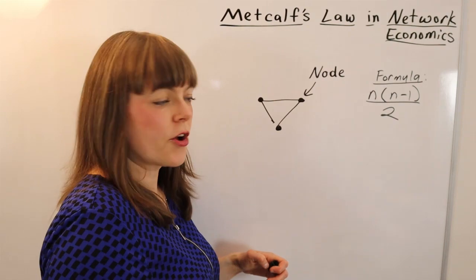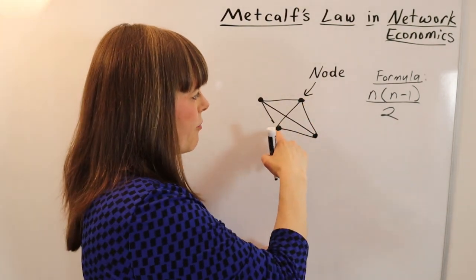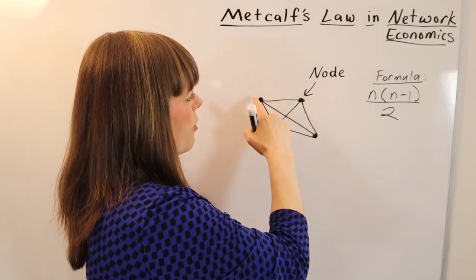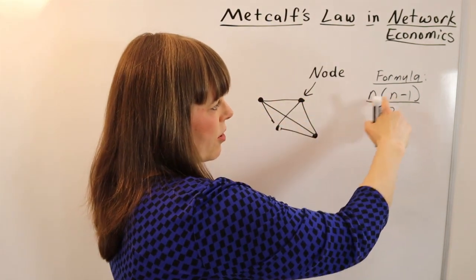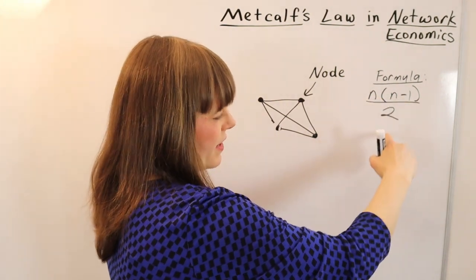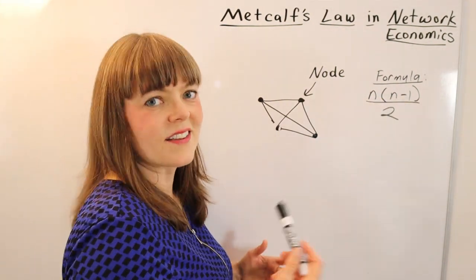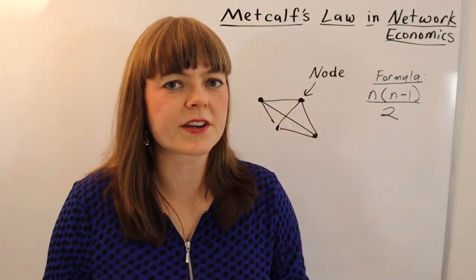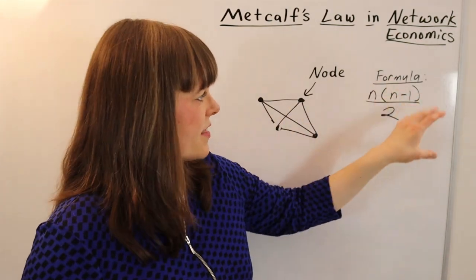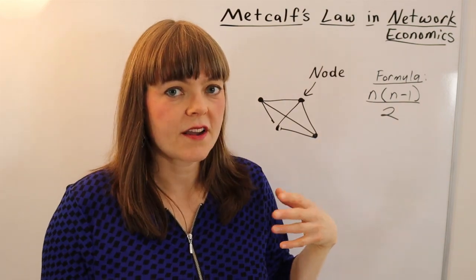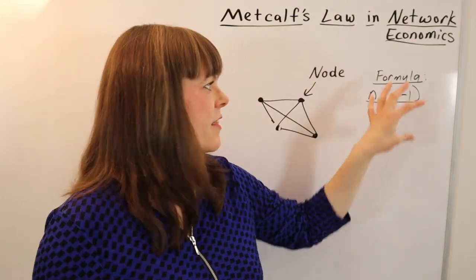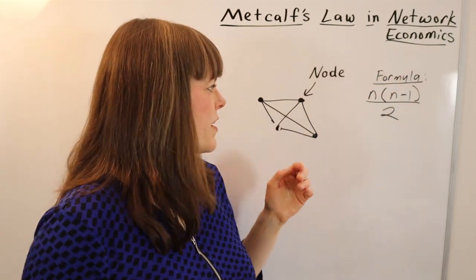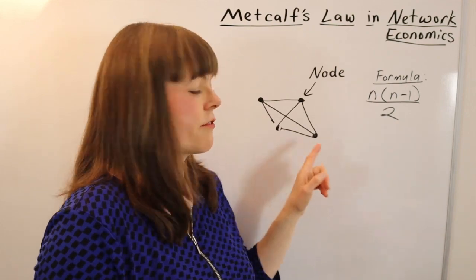Let's add another node. With four nodes, n equals four, the number of possible connections is one, two, three, four, five, six. And so that's four times three divided by two — which is six. We could add other nodes and test the formula, and the formula is going to work. You can see that this formula is not exactly n squared, but as n approaches infinity it approaches n squared. So there's exponential growth in the number of connections as you increase the number of nodes.